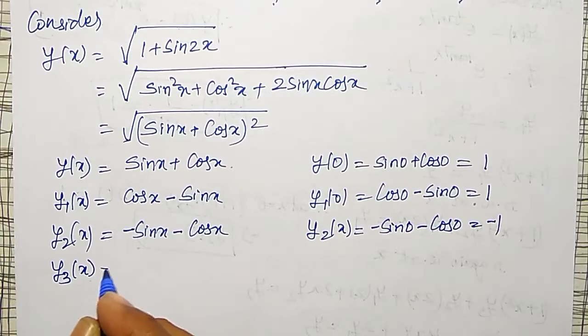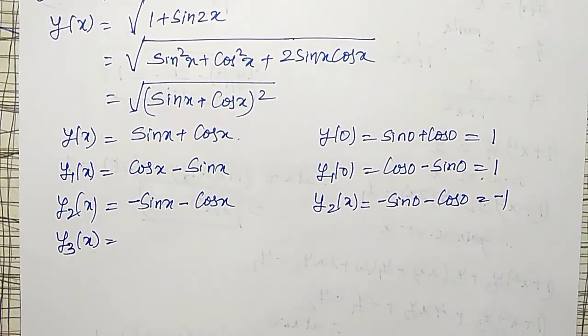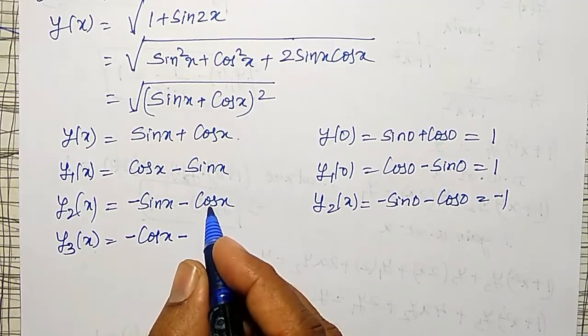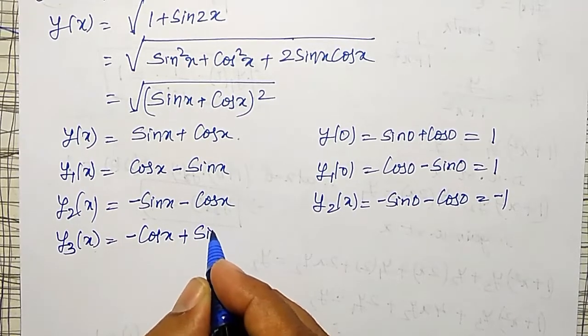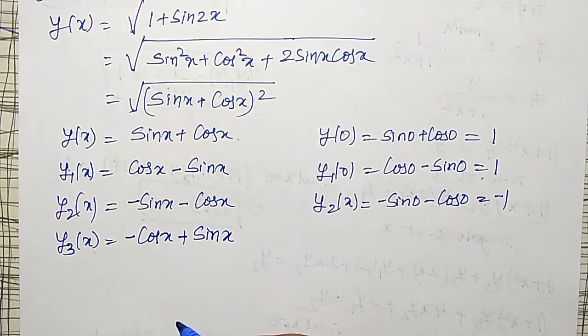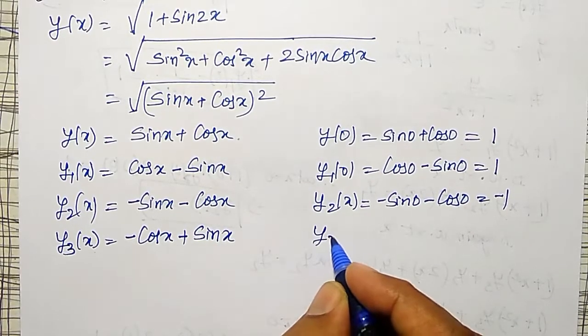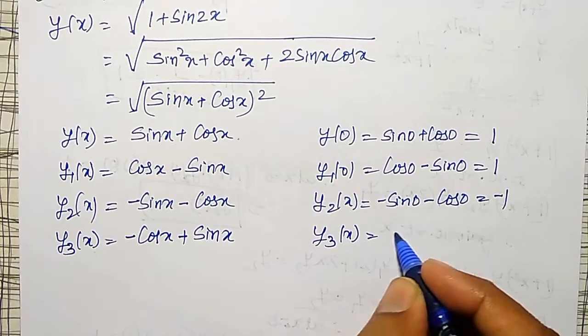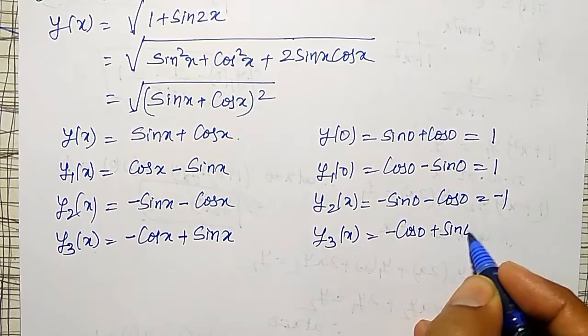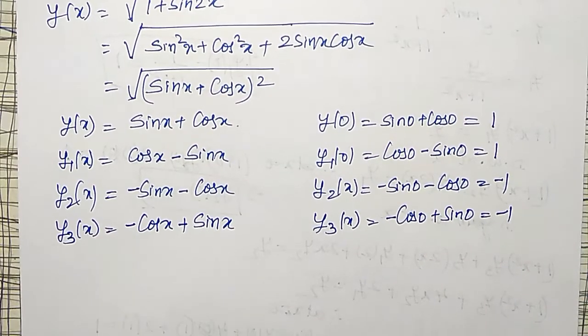Like that, y3(x), its derivative again, I will get minus cos x minus of minus becomes plus sin x. Differential of cos is minus, only minus is there, therefore it will become minus. Therefore my y3 of x is the value of minus cos 0 plus sin 0, which is equal to minus 1.